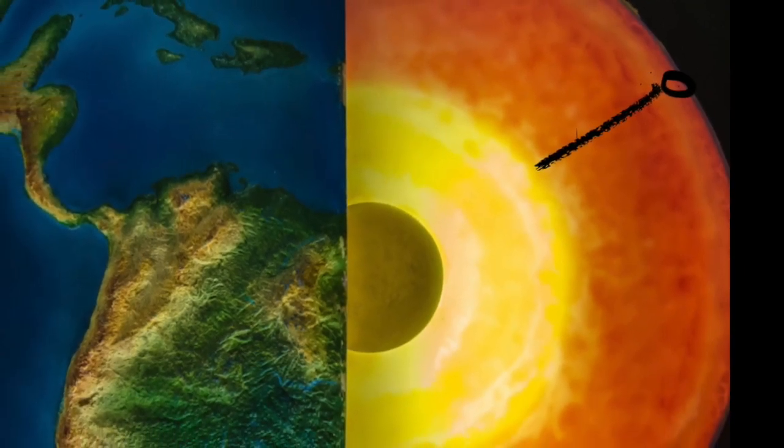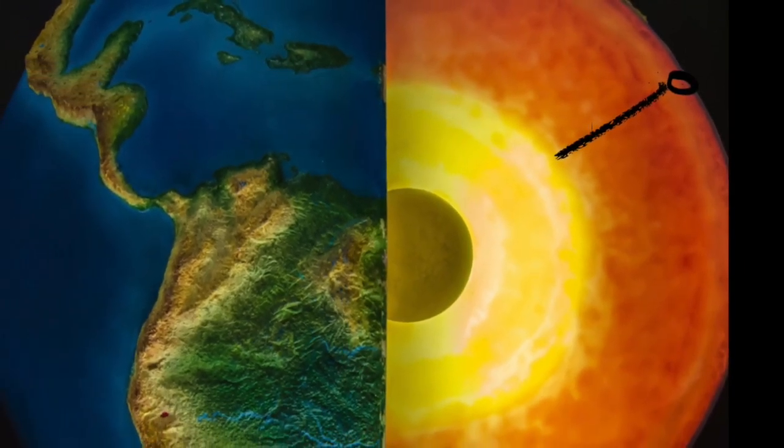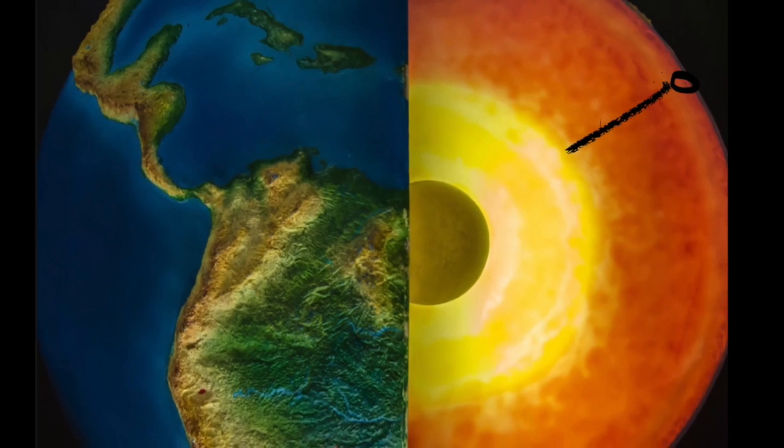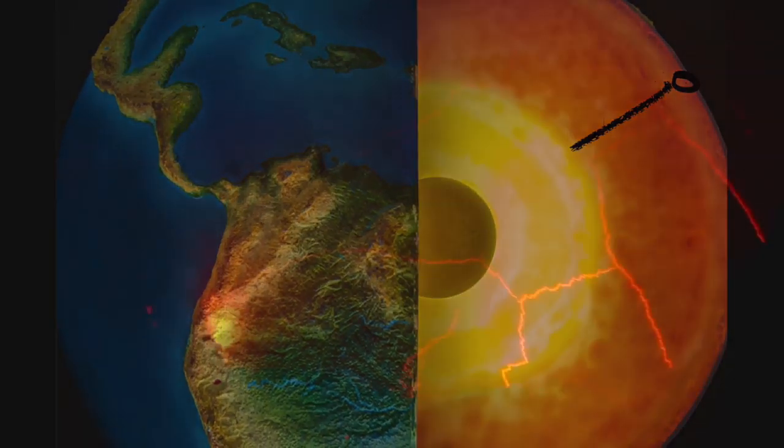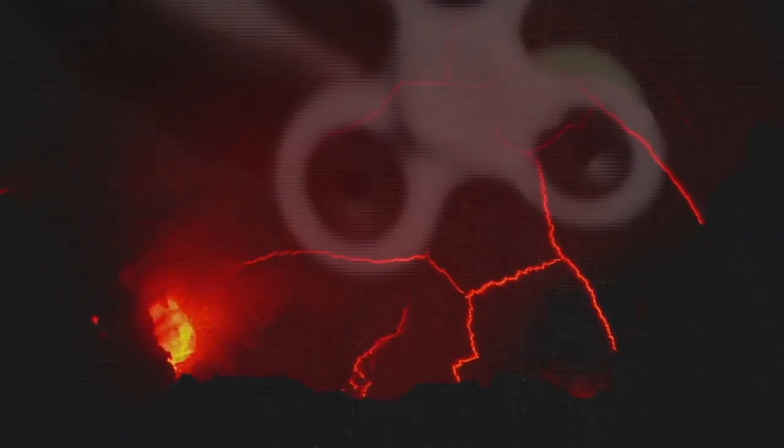You'd have to go another 14 miles to get through the crust to the mantle, and another 1,800 miles to get through the mantle to the core. The outer edge of the core is more than 9,000 degrees.